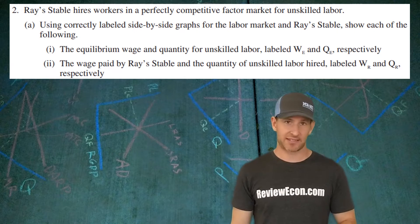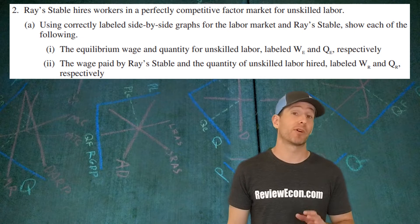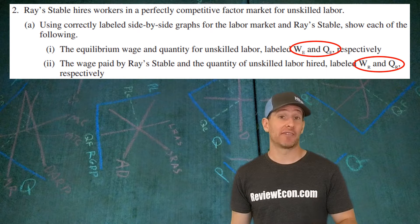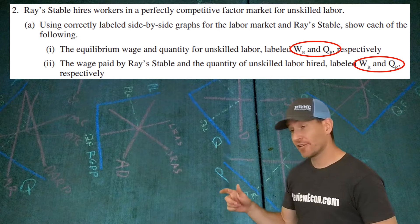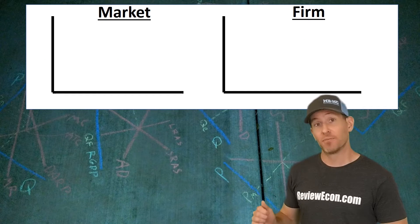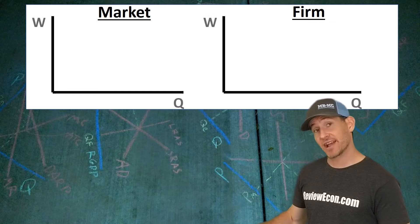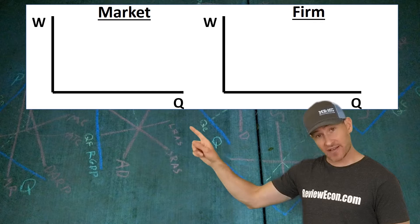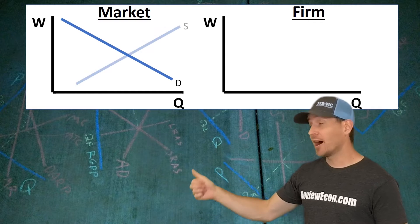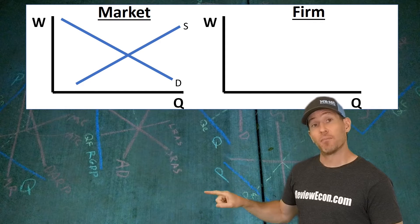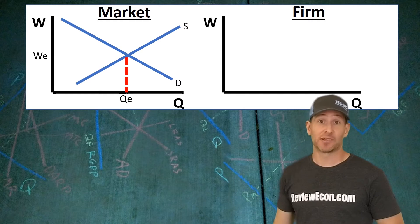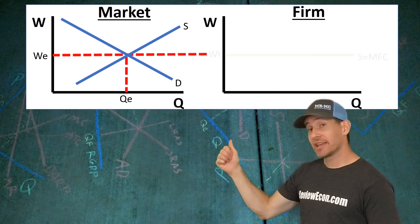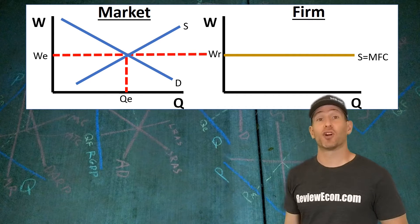For this question, we have Ray Stable. He hires workers in a perfectly competitive labor market. We need to draw both the market and the graph for Ray Stable. Start off with two side-by-side graphs. Both of them will have quantity on the x-axis and wage on the y-axis. In the market, you're going to have a downward-sloping demand curve and upward-sloping supply curve. Mark that equilibrium quantity and the equilibrium wage as the question asks for. Carry the equilibrium wage over to that firm graph.